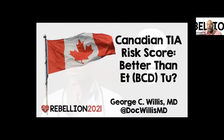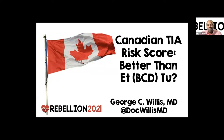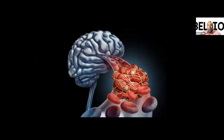What do we do with this person who appears to have had a TIA? What risk scores can we use? Is the Canadian risk score better than ABCD2, which is the commonly used risk score? When we think about patients who come in with a TIA, the big thing we worry about is whether this patient will subsequently have a stroke.